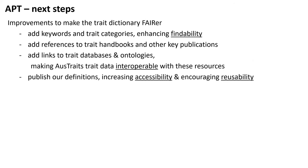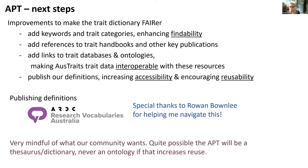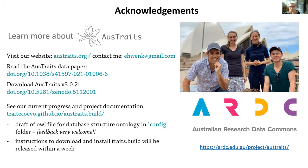Going forward, we're trying to make our trait dictionary FAIR in preparation for publishing it. We're adding keywords and trait categories — broader and narrower concepts — adding references wherever possible, and adding links to whatever trait databases and ontologies do exist, so that our trait dictionary will be interoperable. We're getting ready to publish our definitions, hopefully through Research Vocabularies Australia — a special thanks to Rowan Brownlee for helping me navigate this. We're very mindful of what our community wants, so we want to make sure we put out a trait dictionary that truly does get reused. Our draft OWL file is available and feedback is most welcome. Thank you.